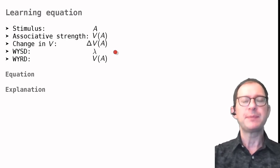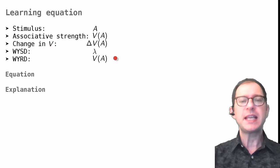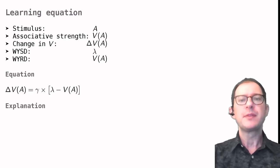And then we have two terms for the WYSD and the WYRD. The WYSD is called lambda. We will see how that is used in a couple of minutes. And the WYRD is VA. This simply reflects the assumption that what you do depends on your associative strength.